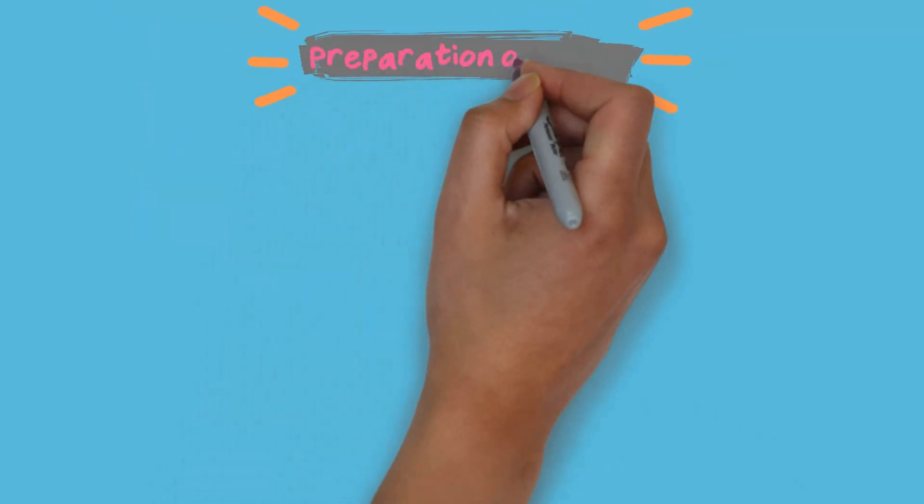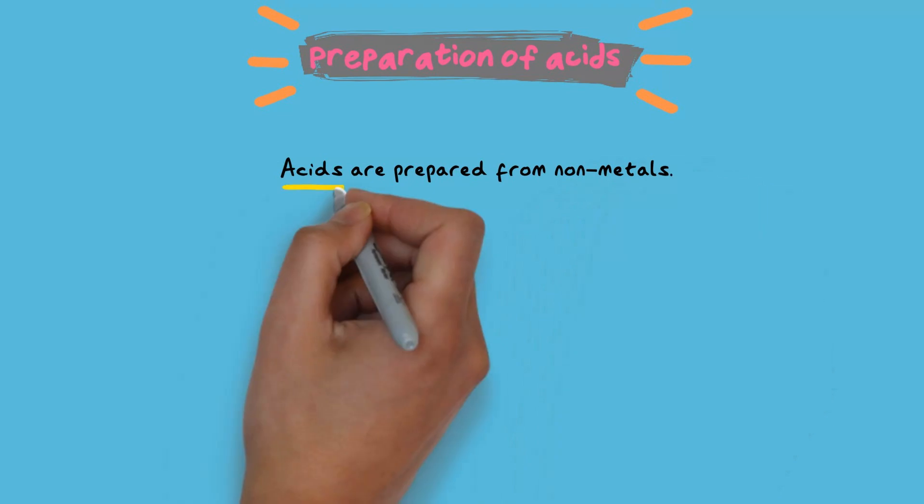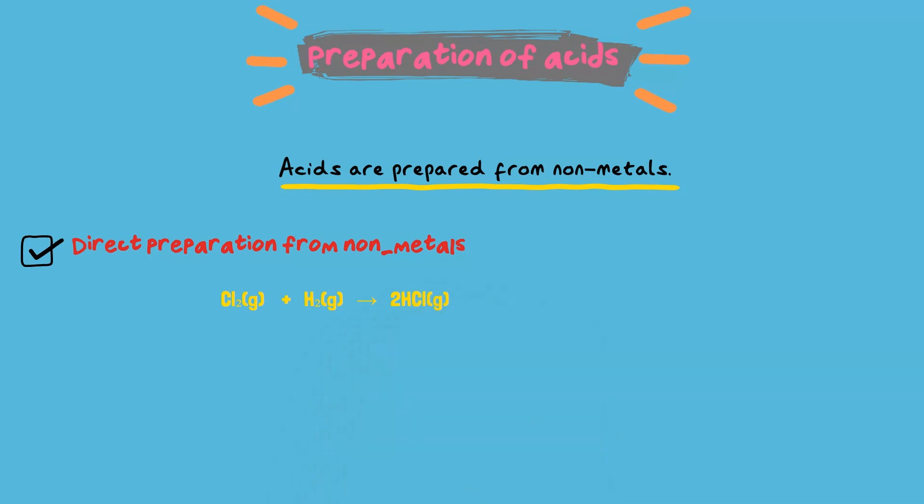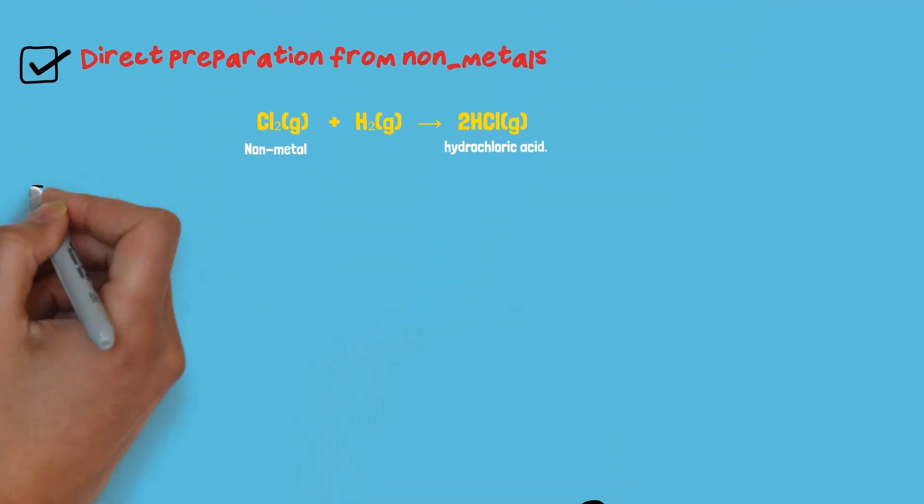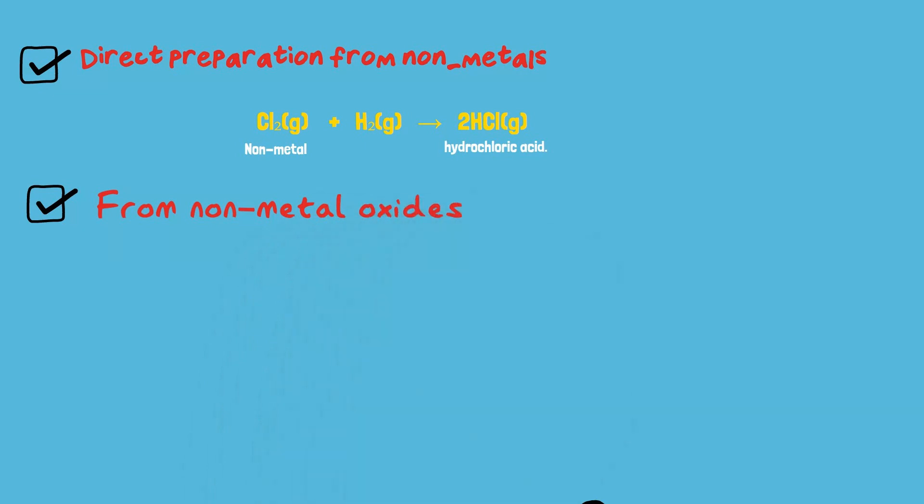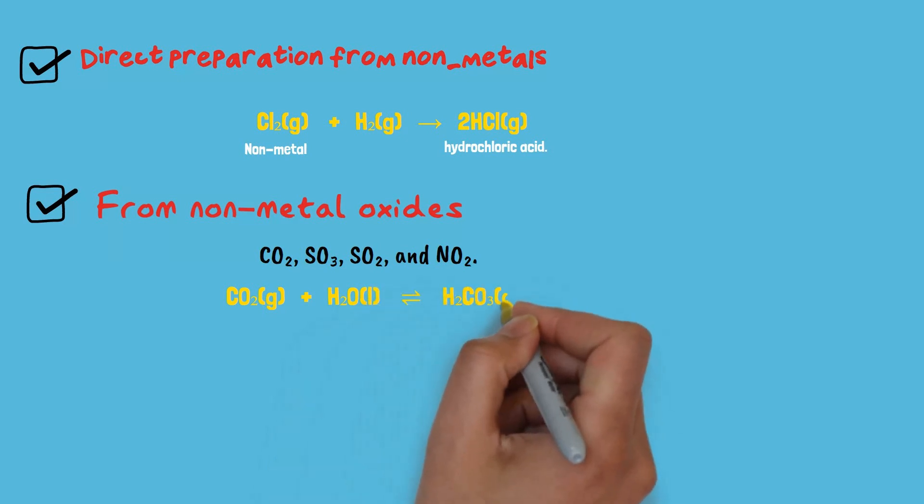Now, let us discuss and understand the preparation of acids. Acids can be prepared from non-metals. For example, Cl2 reacts with H2 to form hydrochloric acid. Acids can also be obtained from non-metal oxides like CO2, SO3, SO2, and NO2.